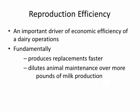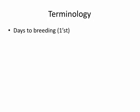Before we go into that, it's important for us to review some important terminology. Days to first breeding is related to the voluntary wait — in other words, how much time after calving before those cows ultimately enter into the breeding pools. Is it 50 days, 60 days, 70 days?